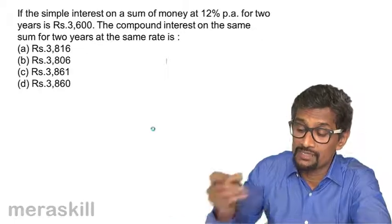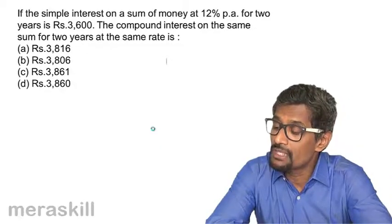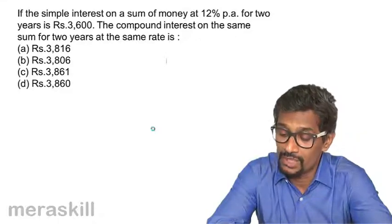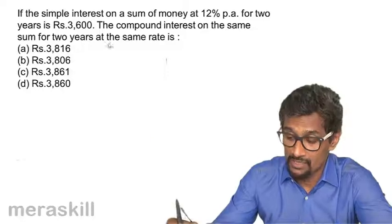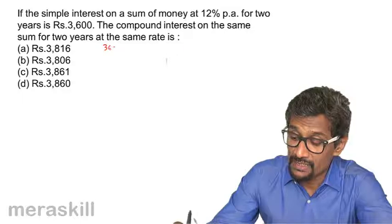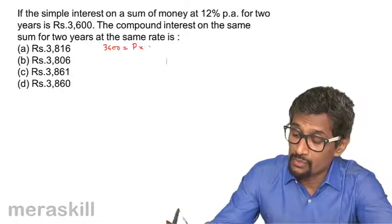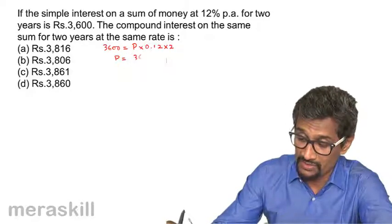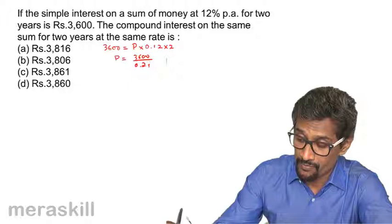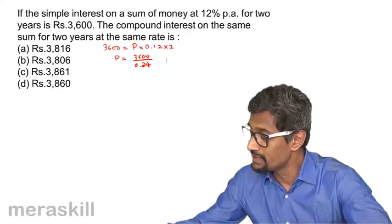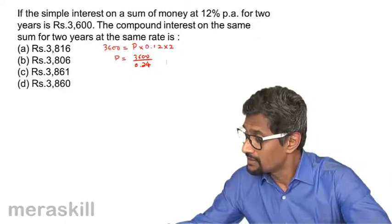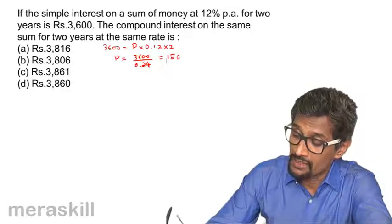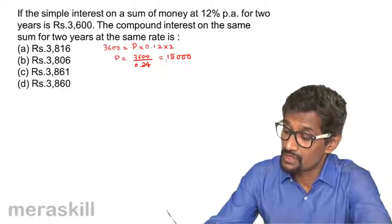Let's take this first example: if the simple interest on a sum of money at 12% per annum for two years is rupees 3600, the compound interest on the same sum for two years at the same rate is what? First we need to find P. Simple interest 3600 = P × 0.12 × 2, so P = 3600 / 0.24, which turns out to be 15,000.